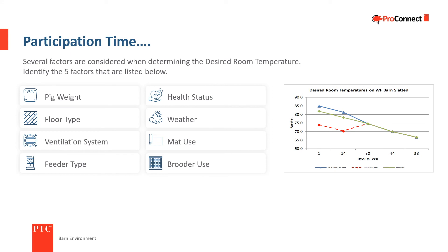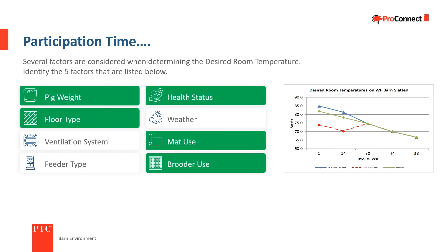Several factors are considered when determining the desired room temperature. The five factors are: pig weight, health status, floor type, mat use, and brooder use.